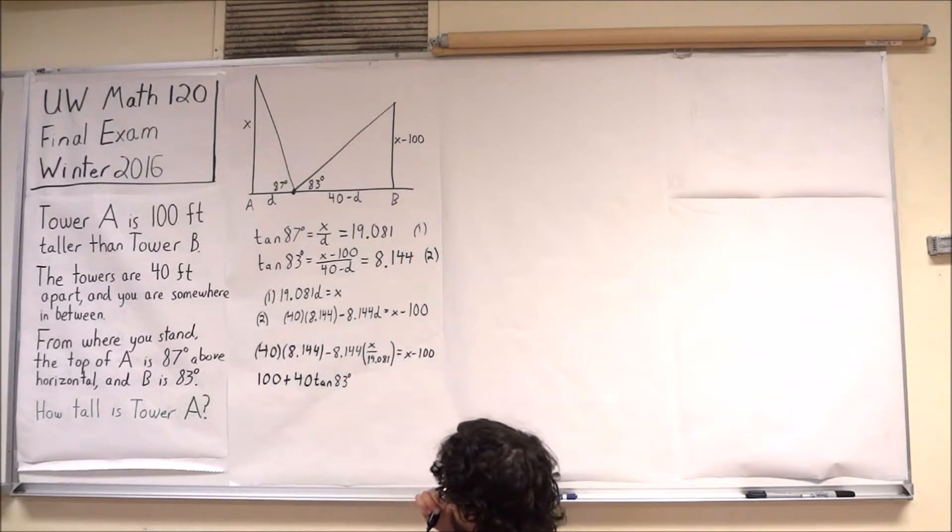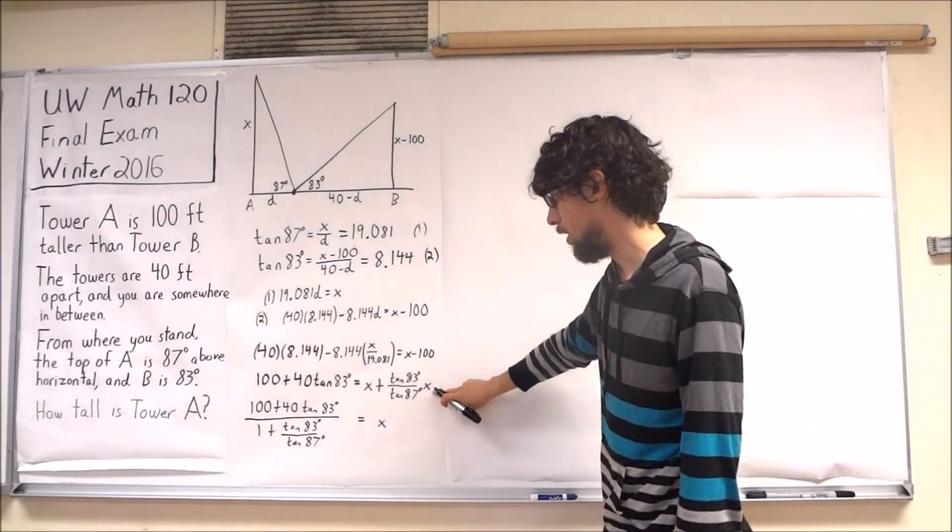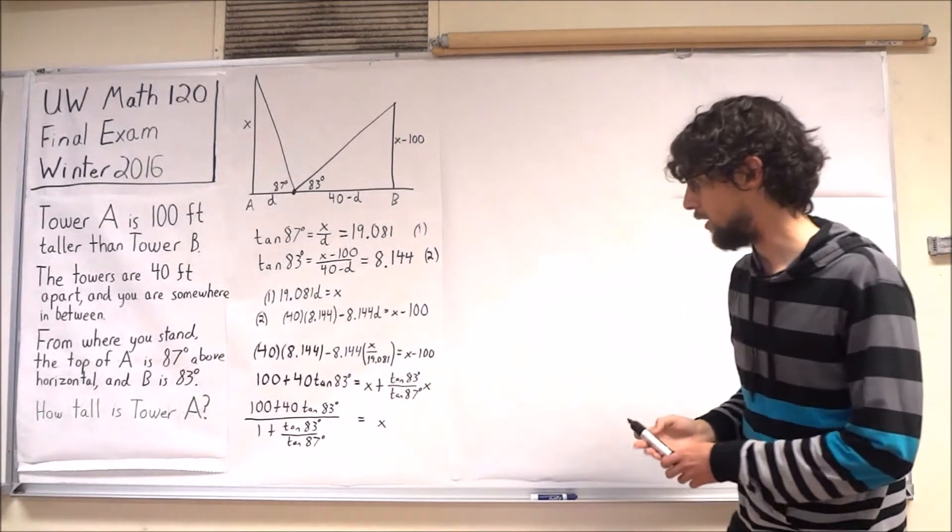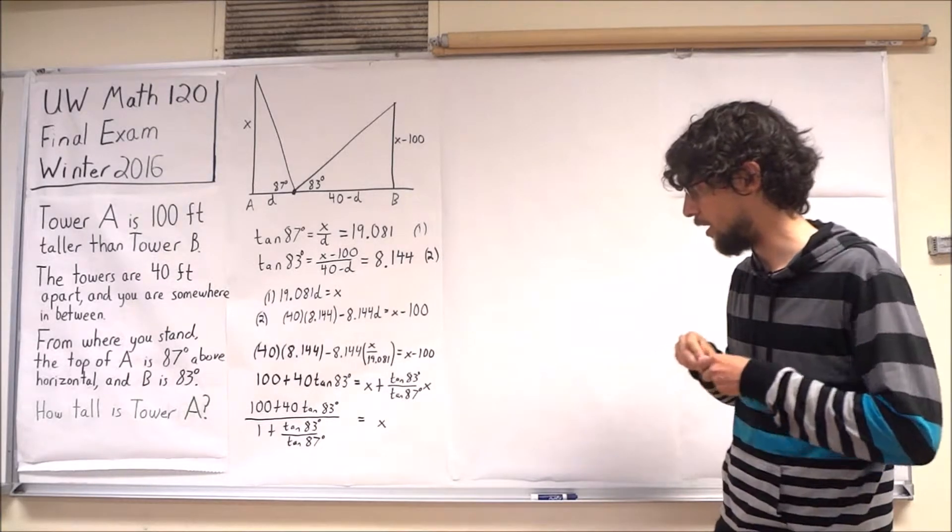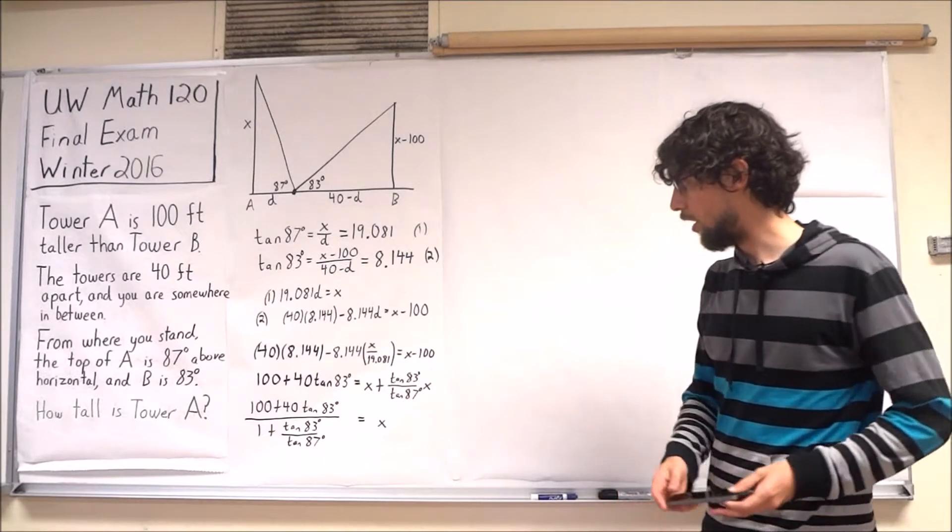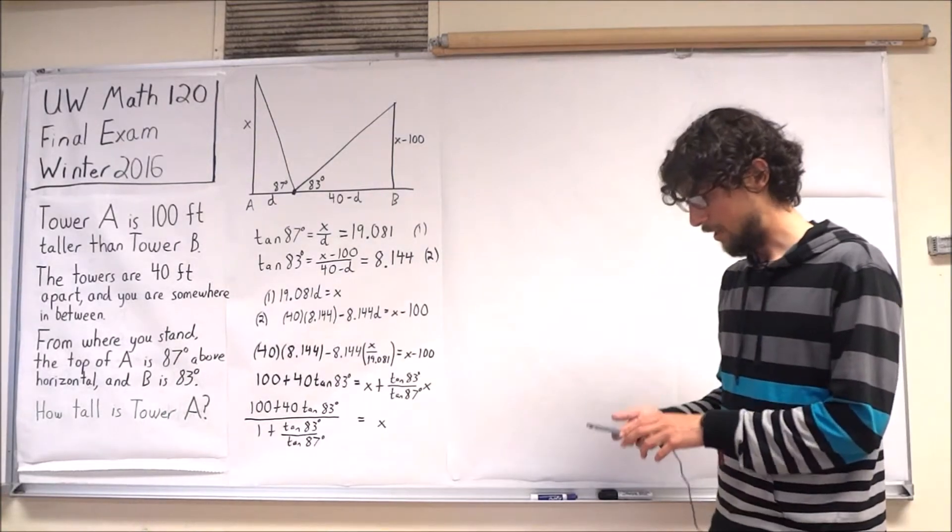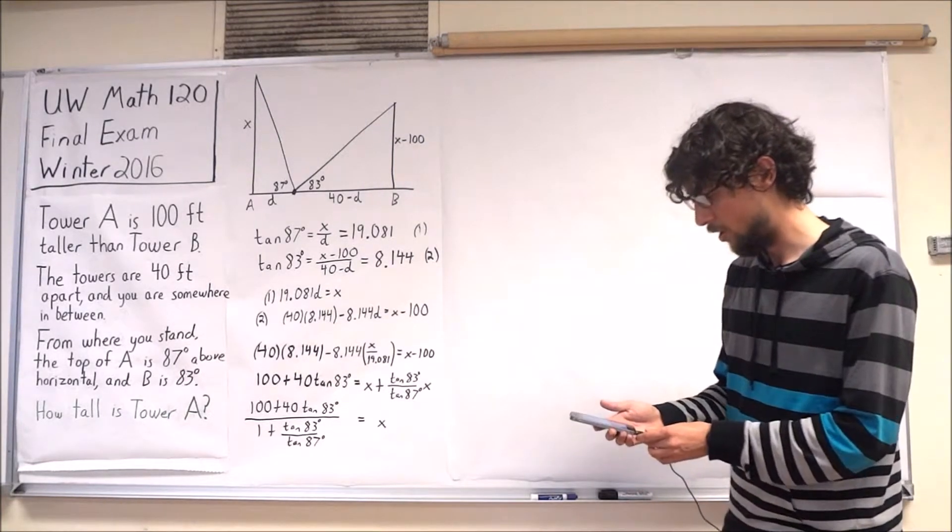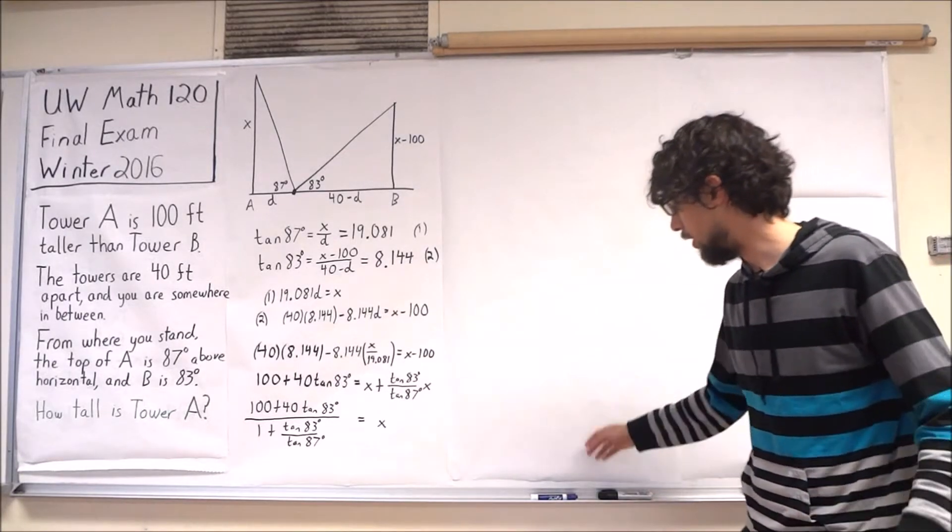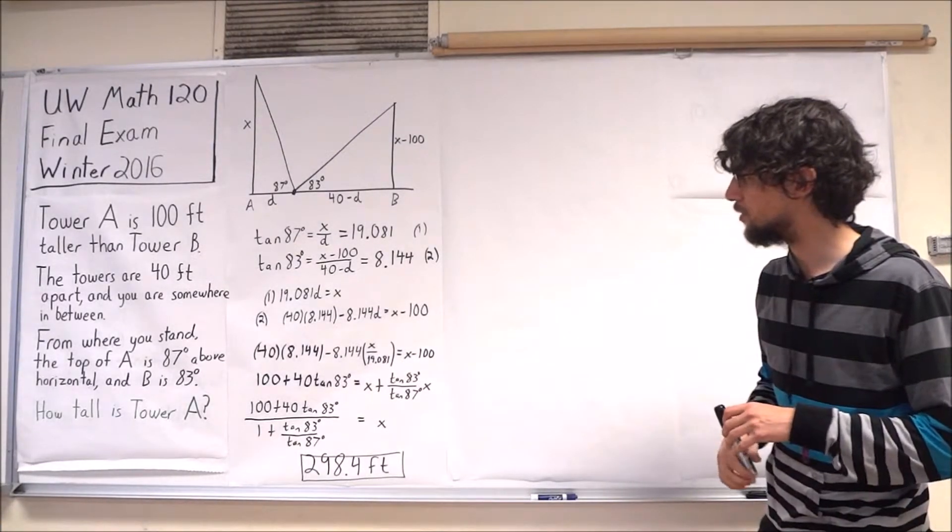So I've brought the 100 over here. So I factored an x out of both these terms on the right and then divided by that term 1 plus tangent 83 over tangent 87. I now have a solution a little ugly to work with, but just some calculator food. My calculator suggests that x is 298.4 feet, which seems actually quite reasonable. This seems quite plausible to me.